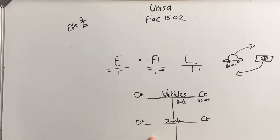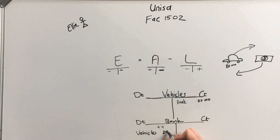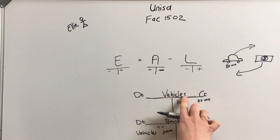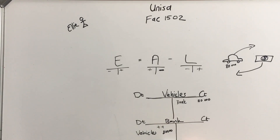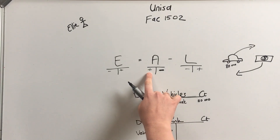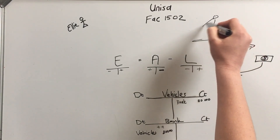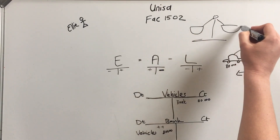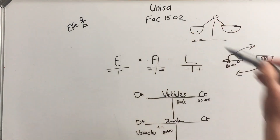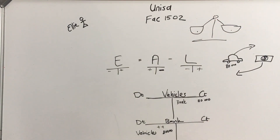Following our minus-plus rule, the bank is going to get more, so we write on the debit side of bank: 'vehicle sold — 80,000.' We credited vehicles and debited bank. Bank went up by 80,000 Rand and vehicles went down by 80,000 Rand — it balances. There's a debit and a credit, and that is done.